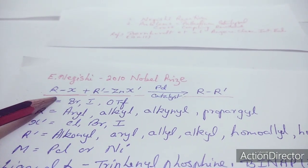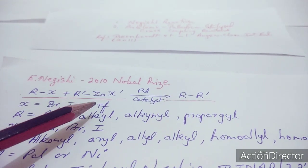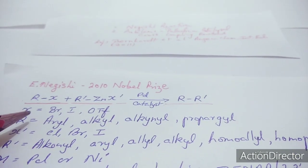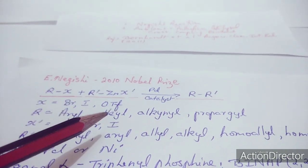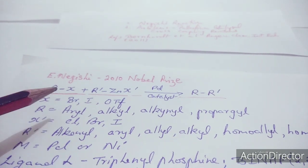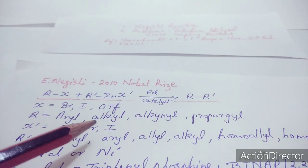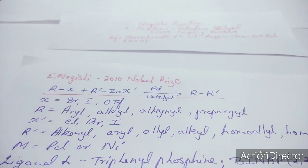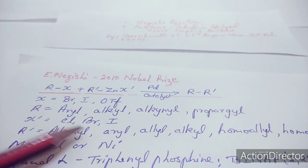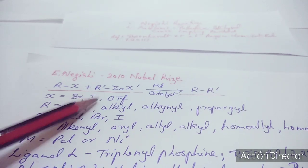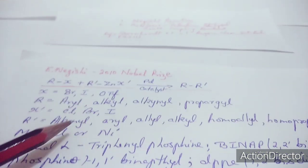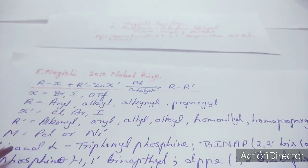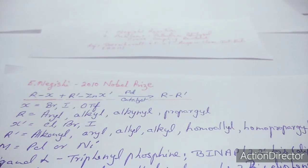The general reaction is: RX plus R'Z–X' in the presence of a palladium catalyst forms the cross-coupled product. The halide X can be bromide, iodide, or a triflate as a good leaving group. R can be aryl, alkyl, or alkynyl. X' is the halide associated with the organozinc reagent — it can be chloride, bromide, or iodide. R' on the organozinc can be alkyl, allyl, homoallyl, or homopropargyl.